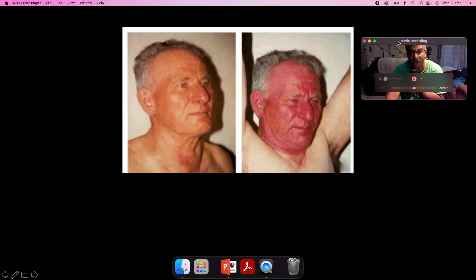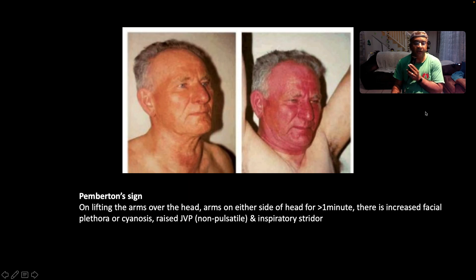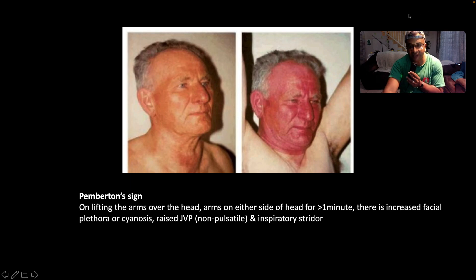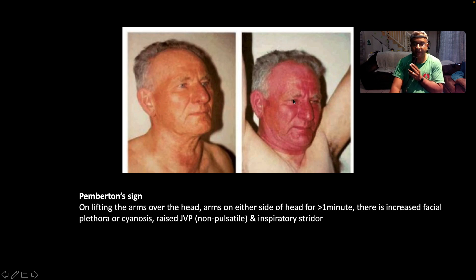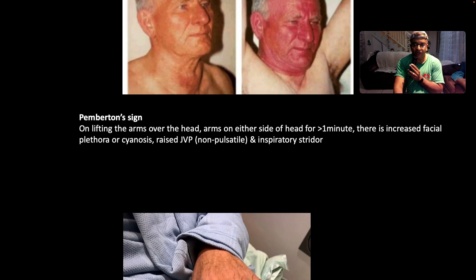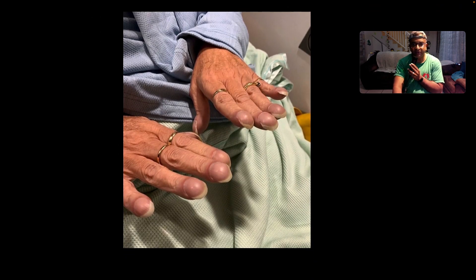This is the infamous Pemberton sign — it also speaks to thoracic outlet obstruction — where you ask the patient to lift both arms over the head for at least a minute. What you're going to see is increased plethora and cyanosis, a raised jugular venous pressure which is non-pulsatile, and it's virtually stridor. This probably speaks to some kind of mass or pathology causing thoracic outlet obstruction and superior vena cava syndrome.